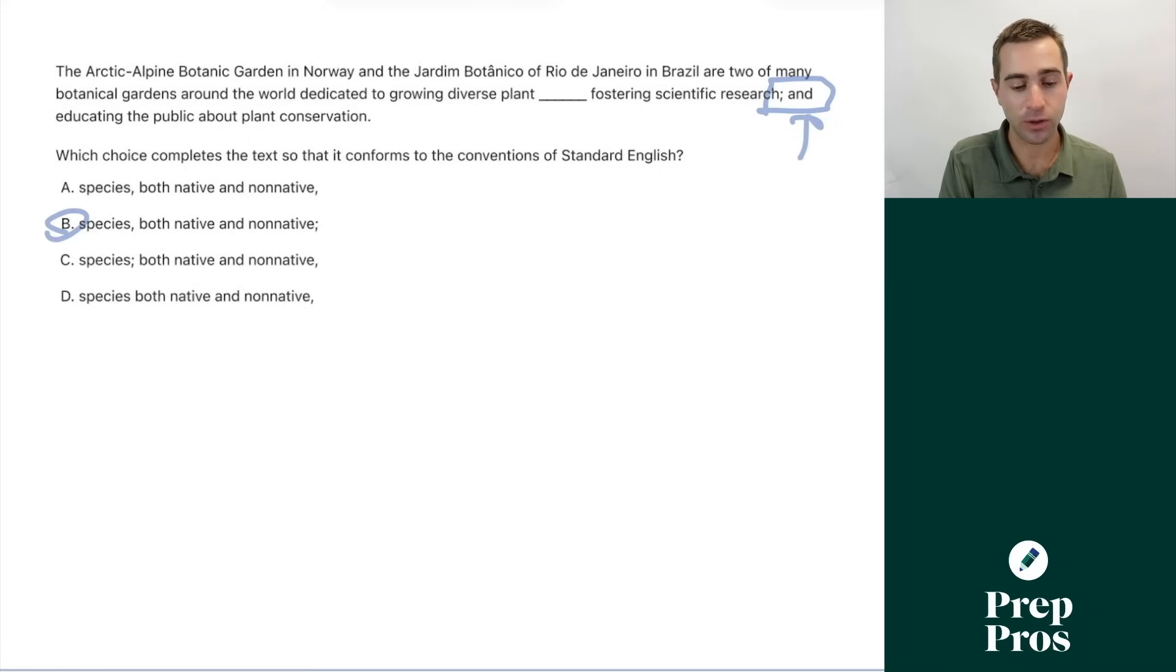That's giving us extra information about the species. The second item in the list, that was our first item, was growing diverse plant species, both native and non-native. The second item is fostering scientific research, and the third item is educating the public about plant conservation. Because we have this comma here, which is not being used to break up items in the list, but is being used for extra information, that's why we need to use the semicolons between the other items in the list, and that's what you need to look out for on test day.